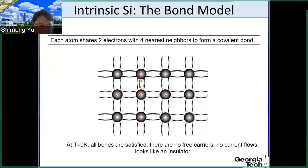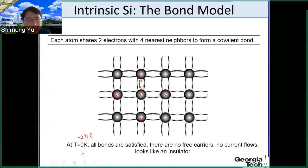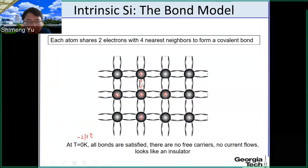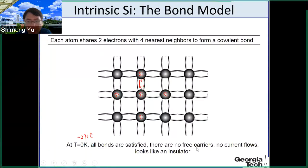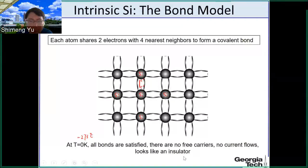At absolute zero temperature, all bonds are satisfied — all electrons form those bonds in the silicon crystal. Because the electrons are bonded, they cannot move even under an electric field. With no free carriers to move, there is no current flow. It looks like an insulator. So at absolute zero temperature, silicon is like an insulator.